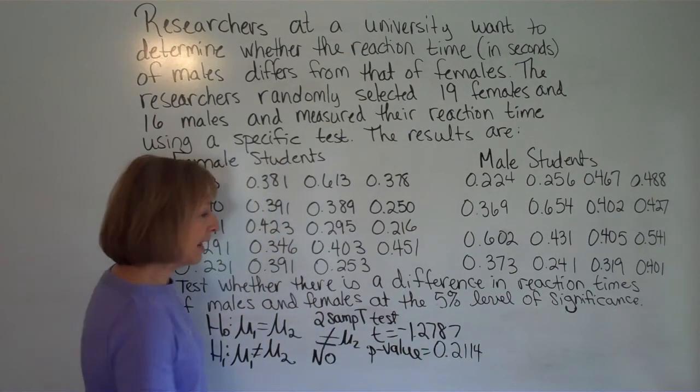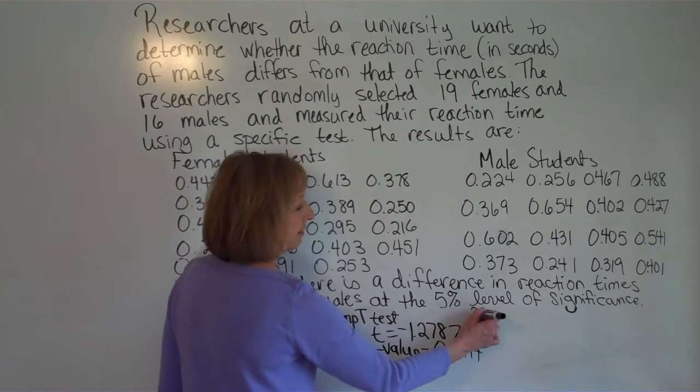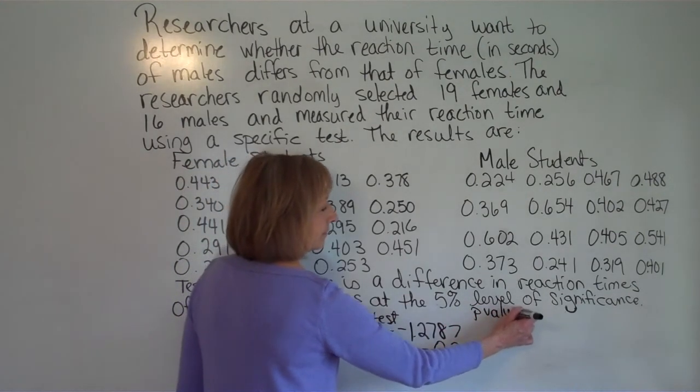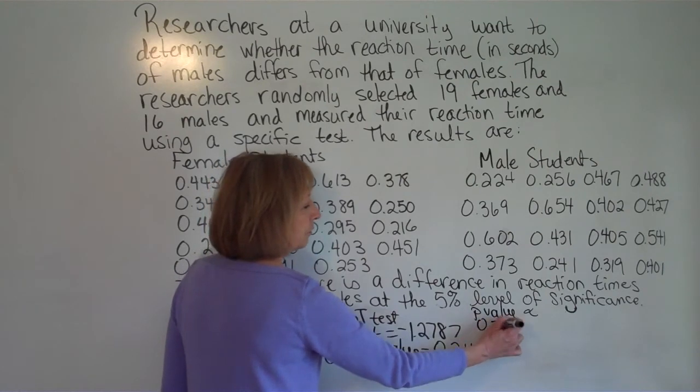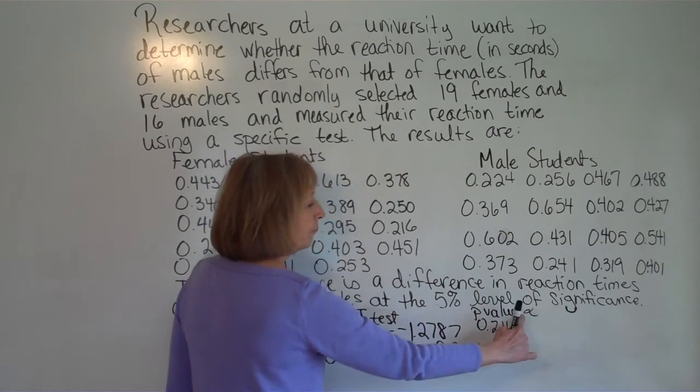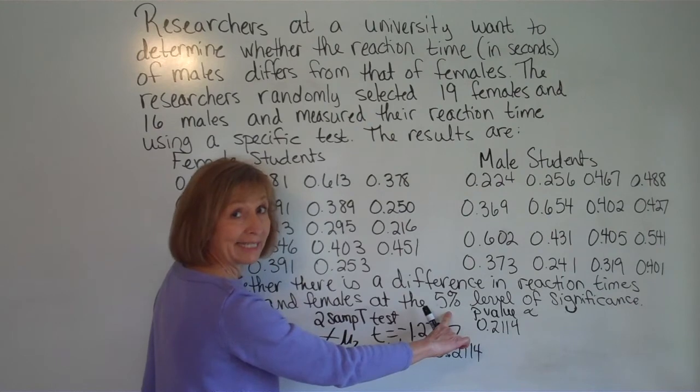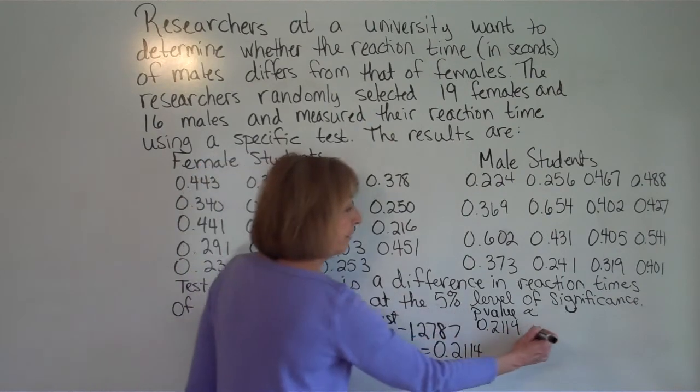Now we want to compare that p value with alpha. The p value is 0.2114. Alpha is your level of significance in decimal form. So it's 0.05.